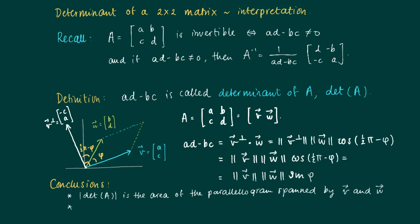Well, that's the first part of the conclusion. The second part is the following: when the determinant is zero, this means that ad minus bc is zero. So if the vectors have non-zero length, then sin(φ) equals zero, which means that φ is zero or φ is π, which means that v and w are parallel.